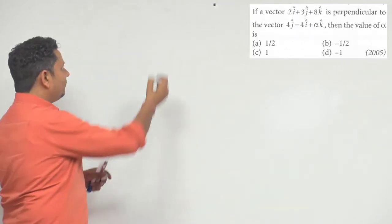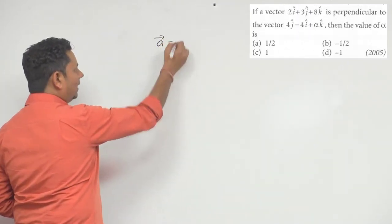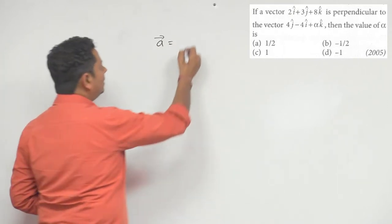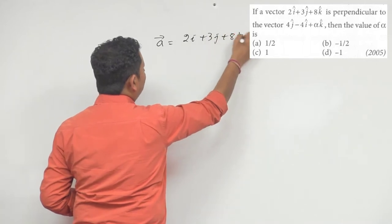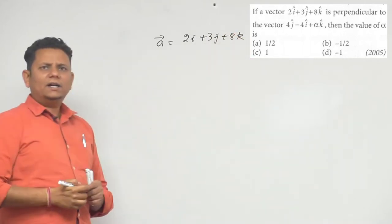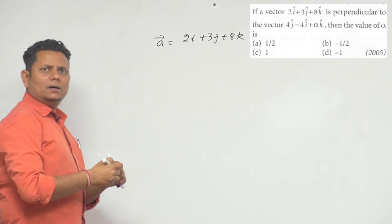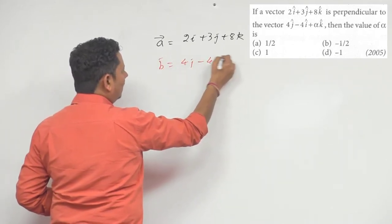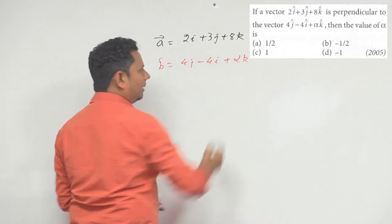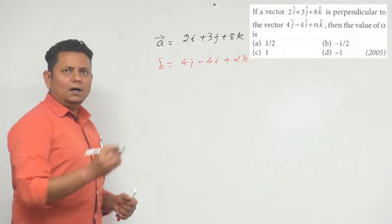write these vectors first. Let's call the first one vector a, and this is equal to 2i cap plus 3j cap plus 8k cap. The second vector b is equal to 4j cap minus 4i cap plus alpha k cap. So these are my vectors. Now we